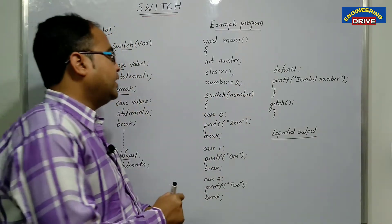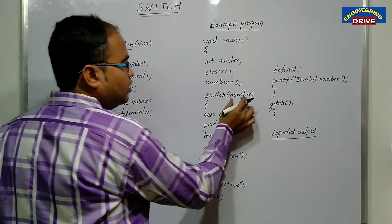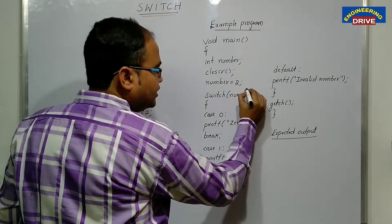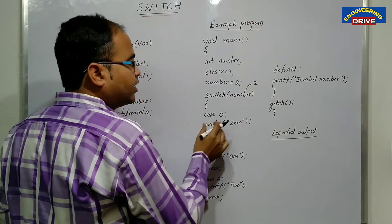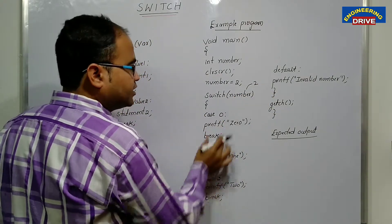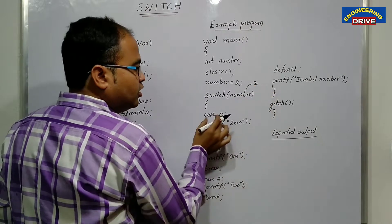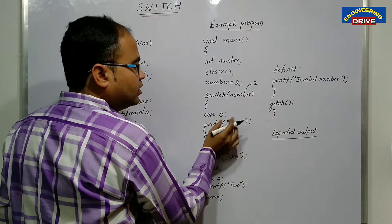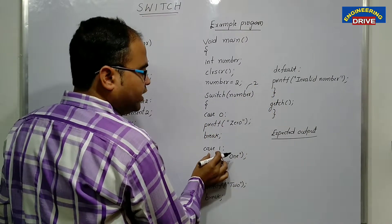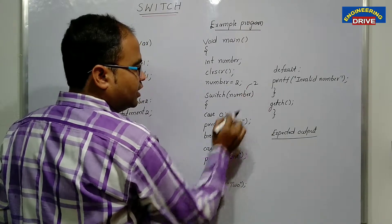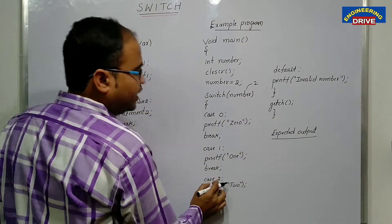Now what happened? Let us start the working of switch now. So wherever number is there, it is substituted with the value two. Now what our computer will do, it will check all the cases which match the value two. First, it will go to case zero. It doesn't match. So it will go to next case one. It also doesn't match. Next, it will go to case number two.